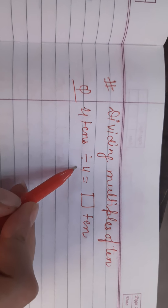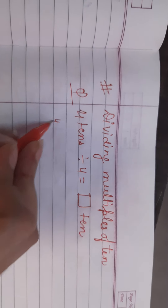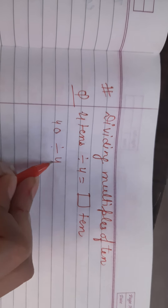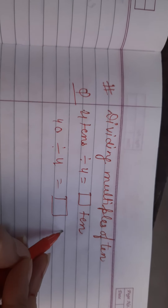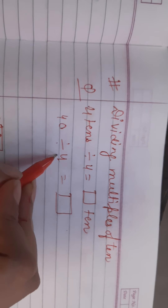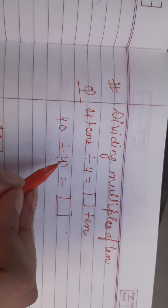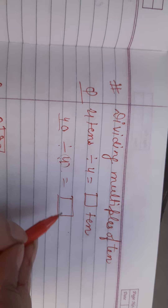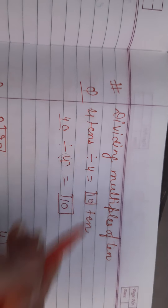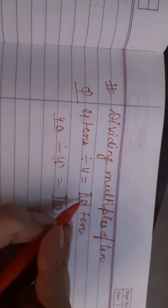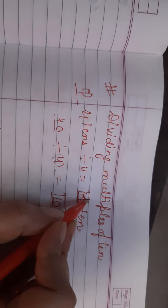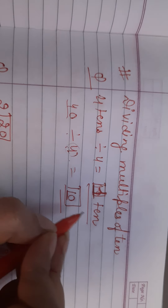Here I have to divide 4 tens divided by 4. So 4 tens means 40, divide it by 4. As we know if we read the table of 4, if we multiply 4 by 10 we will get 40. That means our answer will be 10. So 10 means 1 ten. We can write it as 1 ten or 10. So this is our answer.